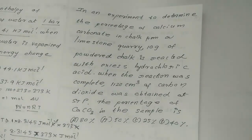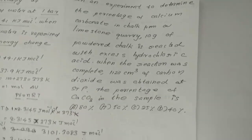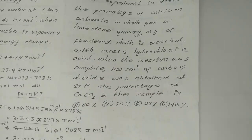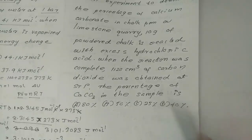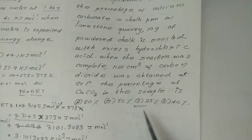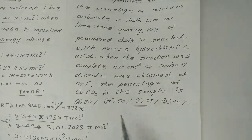MCQ: In an experiment to determine percentage of calcium carbonate in chalk from a limestone quarry, 10 grams of powdered chalk is reacted with excess hydrochloric acid. When the reaction is completed, 1120 cm³ of carbon dioxide was obtained at STP. The percentage of CaCO₃ in the sample is: option A 80%, option B 50%, option C 25%, option D 40%.